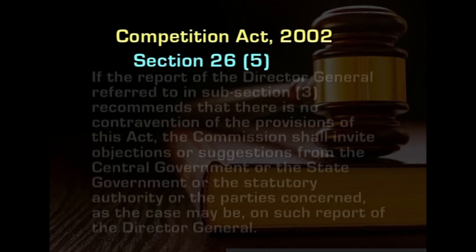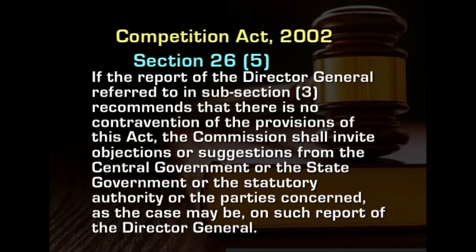Section 26(5) reads: if the report of the Director General referred to in subsection 3 recommends that there is no contravention of the provisions of this act, the commission shall invite objections or suggestions from the central government, state government, statutory authority, or parties concerned on such report. Even when the Director General finds no contravention, the referring authorities and parties are given a hearing. This satisfies the principle of audi alteram partem — giving notice to the other side and disclosing the investigation findings.